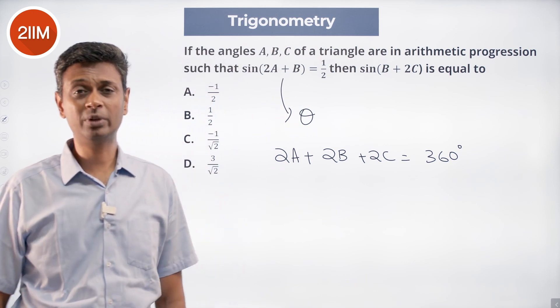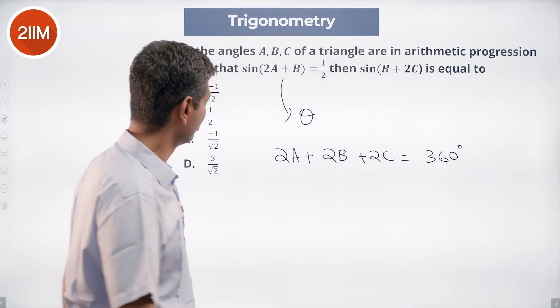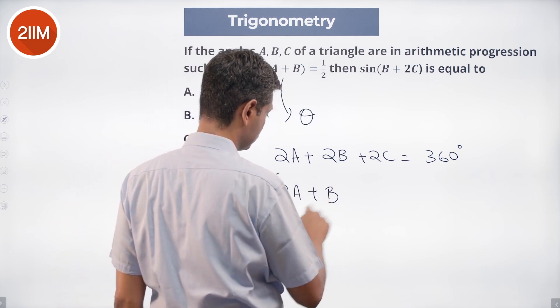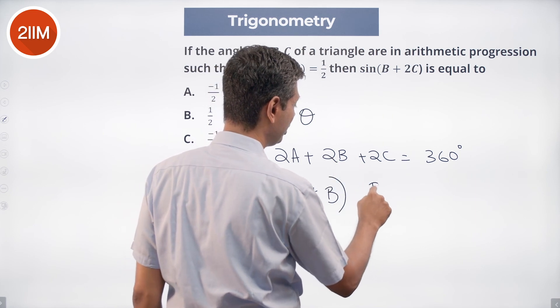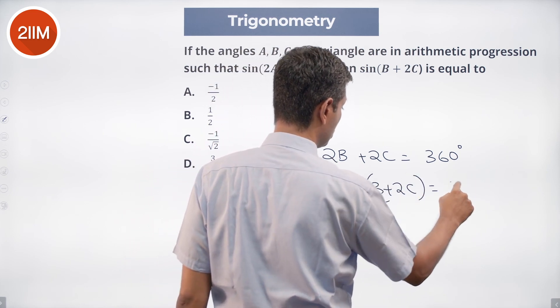Why? The sum of angles of a triangle is 180 degrees. Twice that will be 360, of which I have 2A plus B here, then the remaining B plus 2C. These two add up to 360.